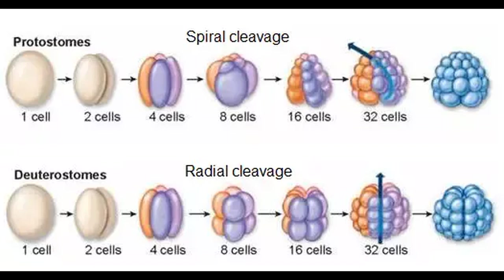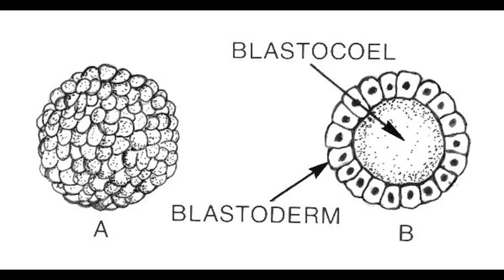Some animals display what is known as radial cleavage, in which the cells seem to be oriented in the same way on top of each other. In spiral cleavage, on the other hand, the daughter cells orient at oblique angles to the parent cell angles, which from the top looks like the cells are spiraling. Thereafter, the embryo forms a fluid-filled center that eventually becomes known as the blastocele. As for the overall morphology, the embryo has become a hollow sphere — the blastula.